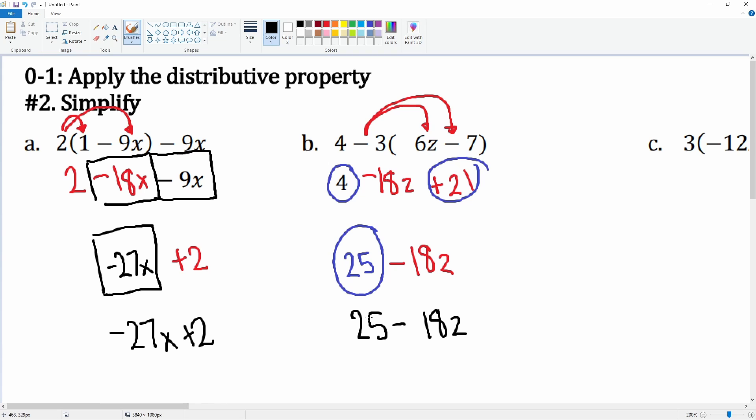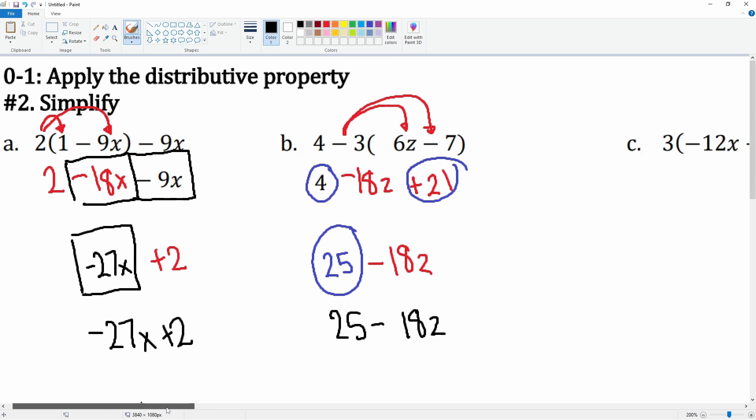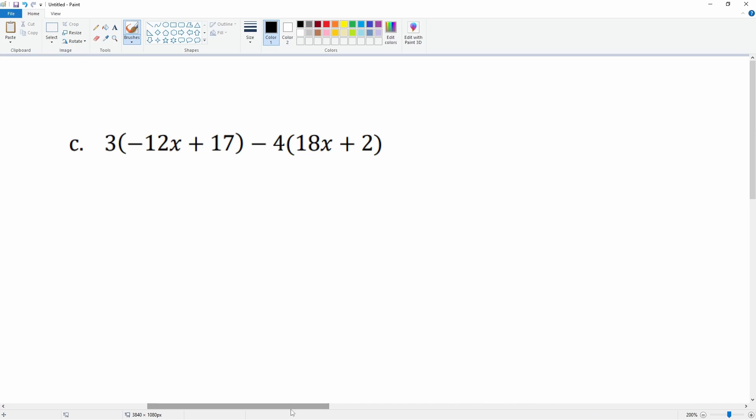For c, it looks like we have to apply distributive property twice because there are two parentheses. So 3 times negative 12 is negative 36x, then we have 3 times 17.